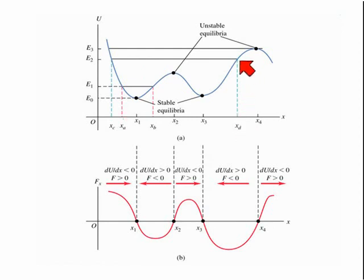If, on the other hand, the total energy is E3 or greater, the particle can escape from the potential well and move off to infinity.